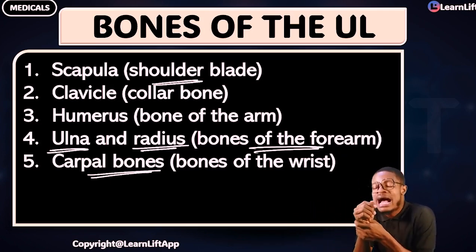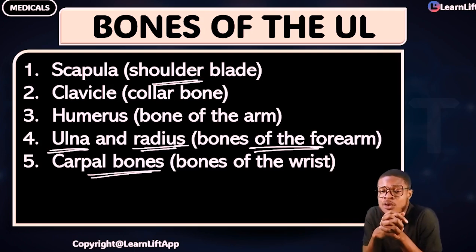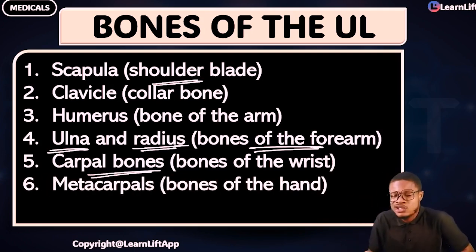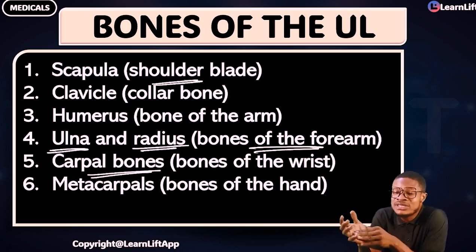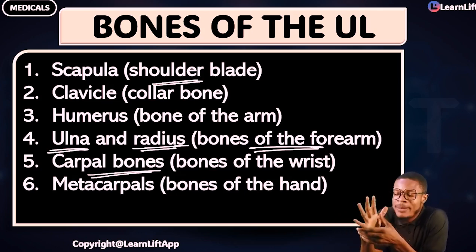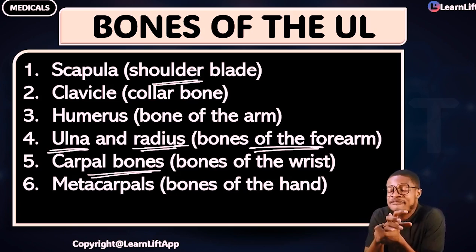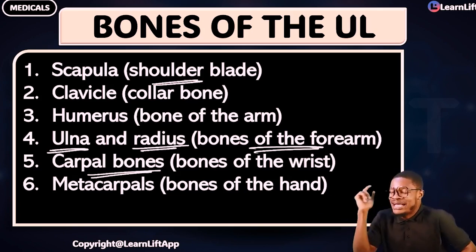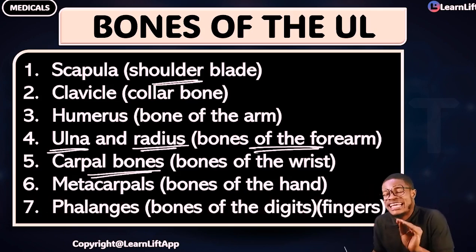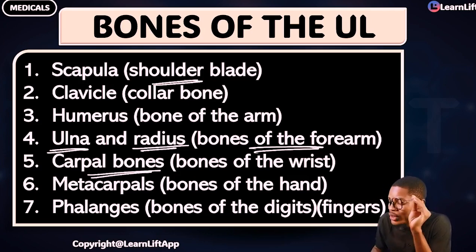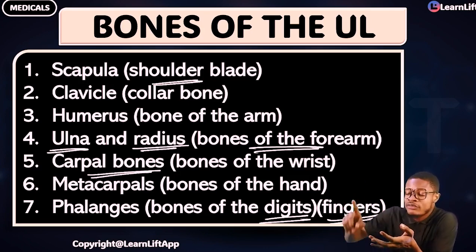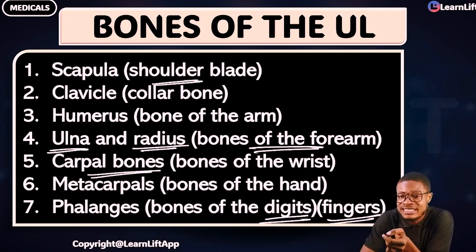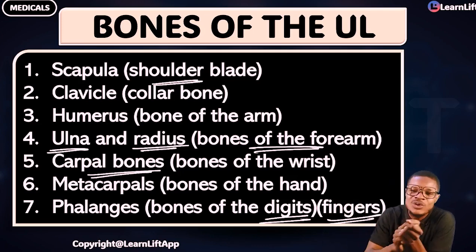How many carpal bones do we have? Eight carpal bones altogether. Then number six is called the metacarpals — the bones of the hand. How many metacarpal bones do we have altogether? There are five of them. Then number seven are called the phalanges — the bones of the digits, or bones of the fingers. Whether you call them bones of the digits or bones of the fingers, they are the same thing.